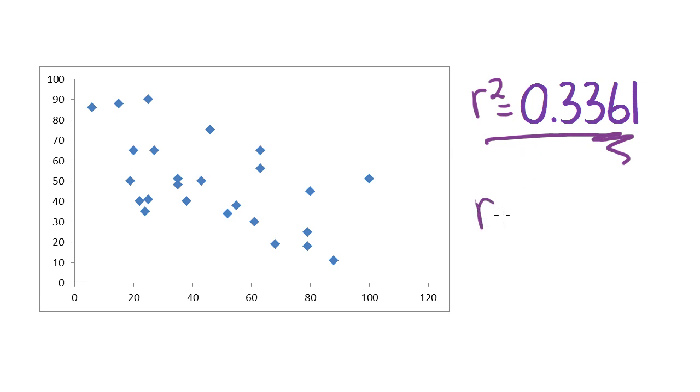So what we're going to do is the square root of 0.3361. It's the inverse of this squaring operation. But when you do a square root, you could get the positive or negative square root of something. So we get two possible r values.